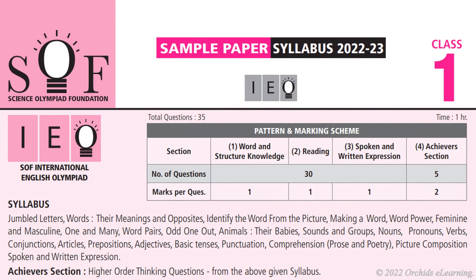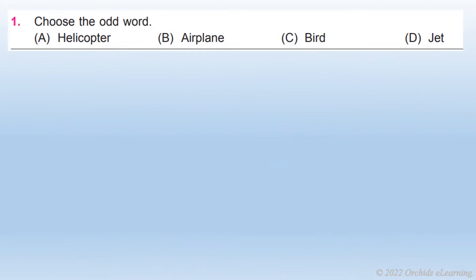Read all the options for every question. Choose the odd word. Answer: C, Bird.